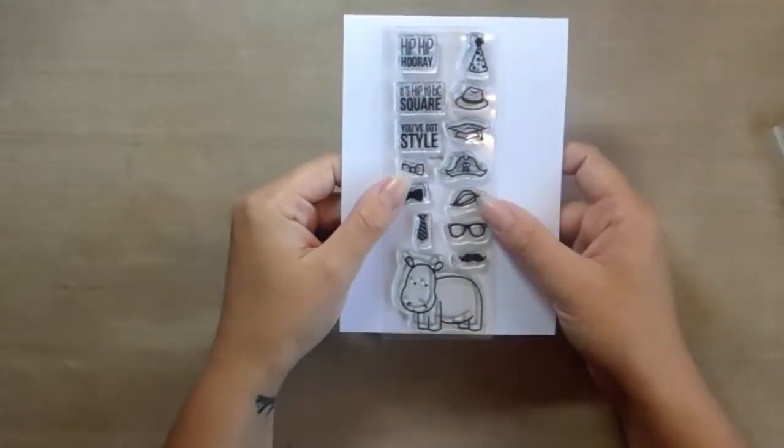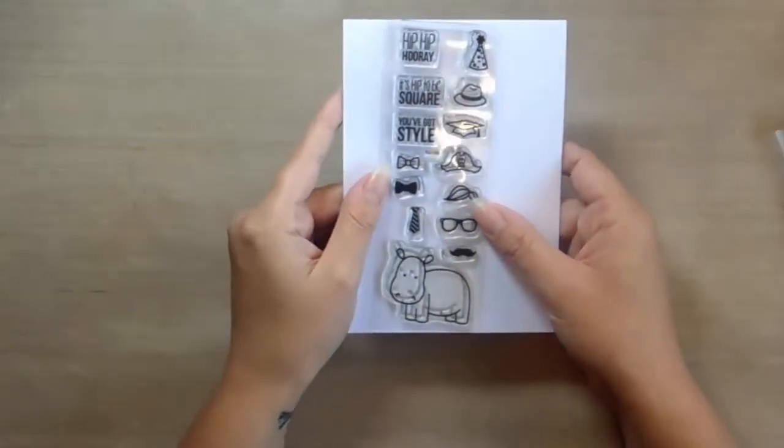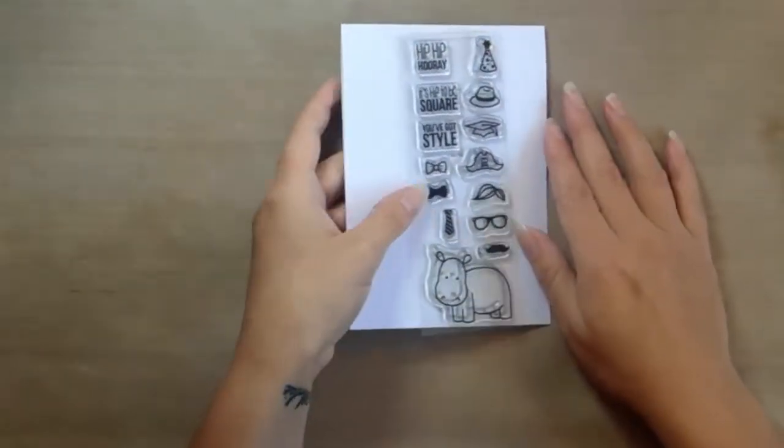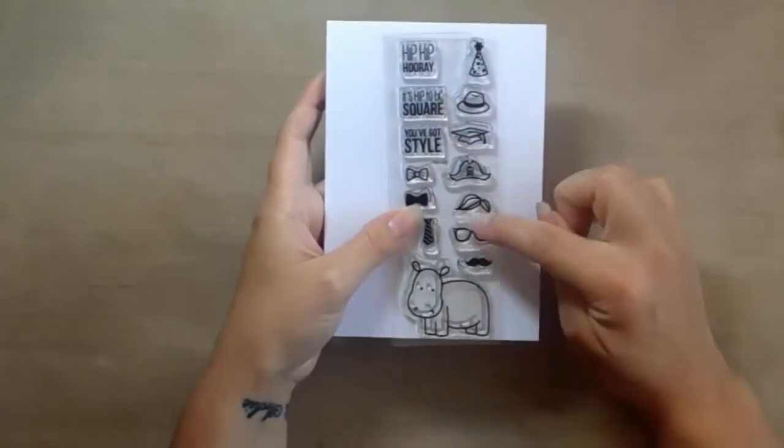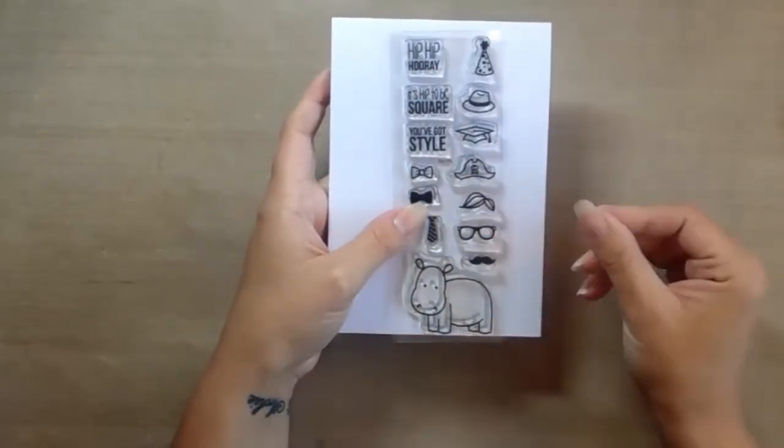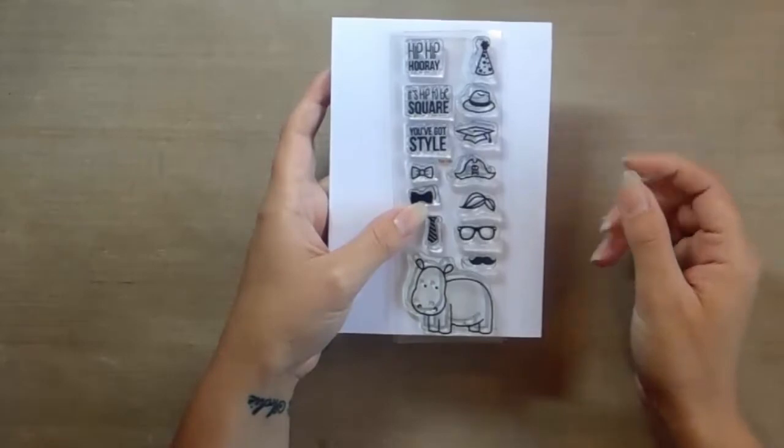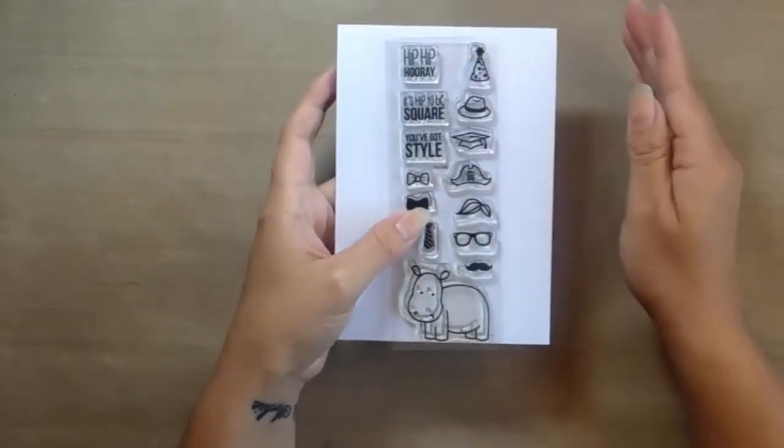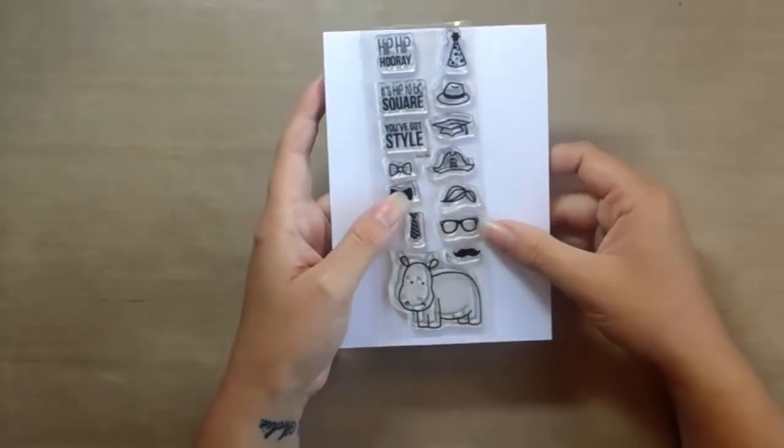When adding accessories to an image, there are two main ways to do this. One, there is masking where you stamp the accessory, mask the accessory off and then stamp the animal. And then there's number two, where you stamp the accessories onto a piece of card, cut, color them and stick them on.